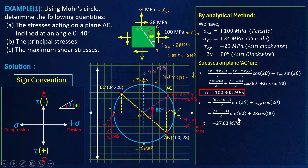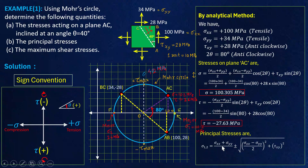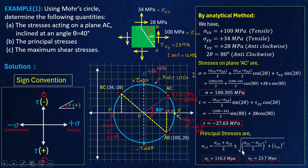Now let's also find the principal stresses sigma 1 and sigma 2. The principal stresses are given by: sigma 1, sigma 2 = (sigma xx + sigma yy)/2 ± √[((sigma xx − sigma yy)/2)² + tau xy²]. When you put the plus sign you get sigma 1 (major principal stress) and with the minus sign you get sigma 2 (minor principal stress). Solving this, sigma 1 = 110.3 MPa — graphically we got approximately 110.2 MPa. Sigma 2 analytically is 23.7 MPa — graphically we got 24 MPa, which is very close.